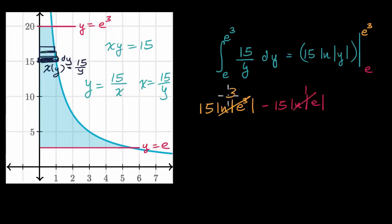So this is 15 times three minus 15. So that is all going to get us to 30. And we are done, 45 minus 15.